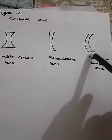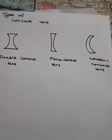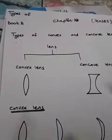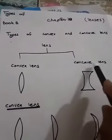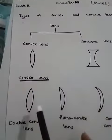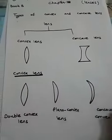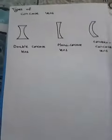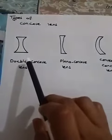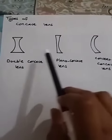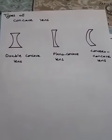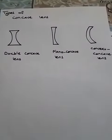I hope you are clear with the types of lenses. The lens has two types — convex and concave — and each is further divided into three different types. See you in the next class, bye, take care.